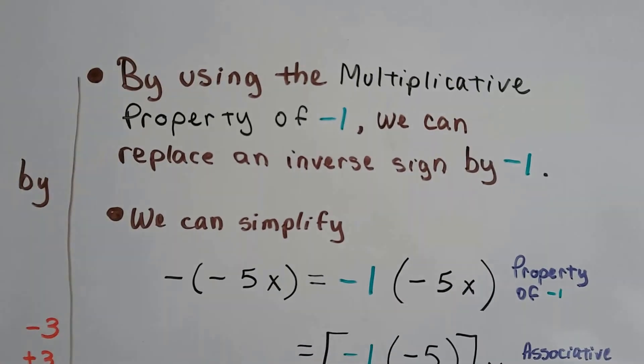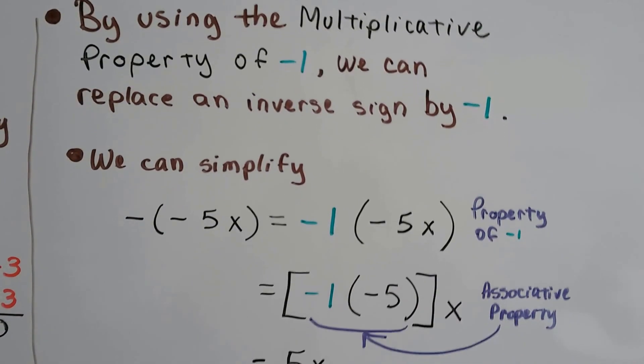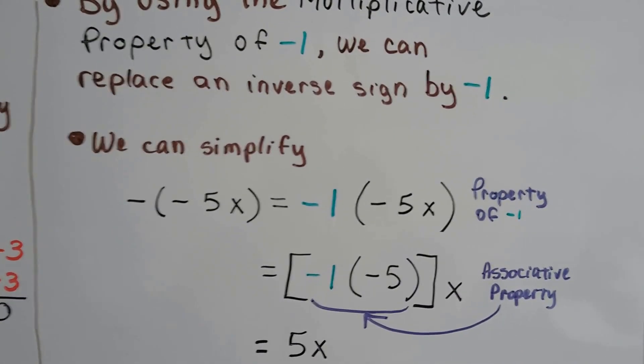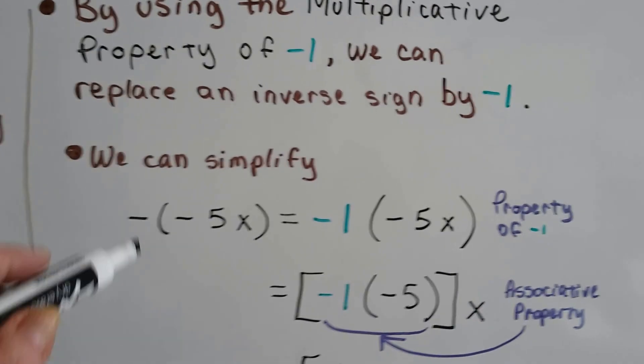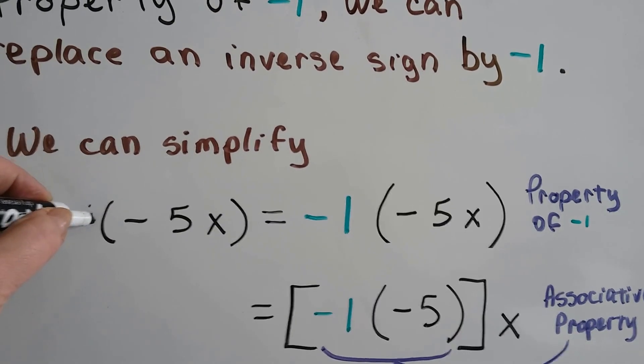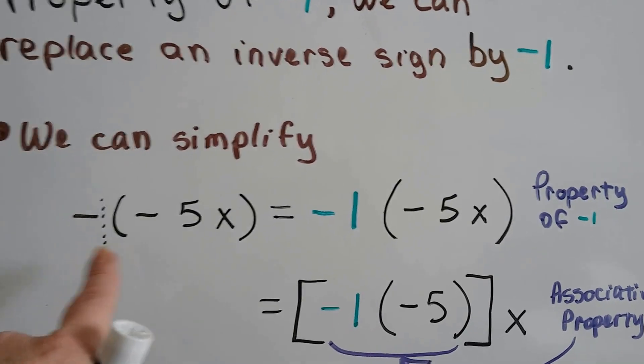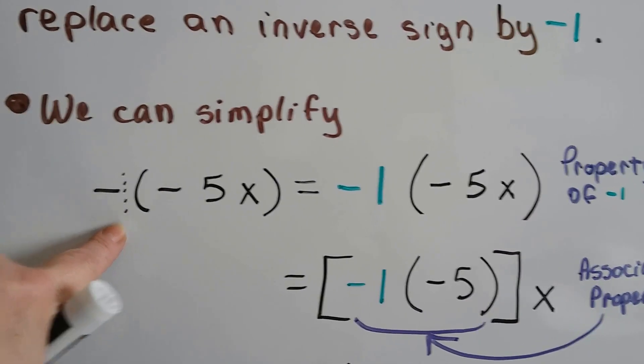So by using the multiplicative property of negative 1, we can replace an inverse sign by negative 1. We can simplify negative times negative 5x. Well, we've got like a little invisible 1 here, don't we? Whenever you see a negative sign in front of the parentheses like that, imagine there's a little negative 1 here.